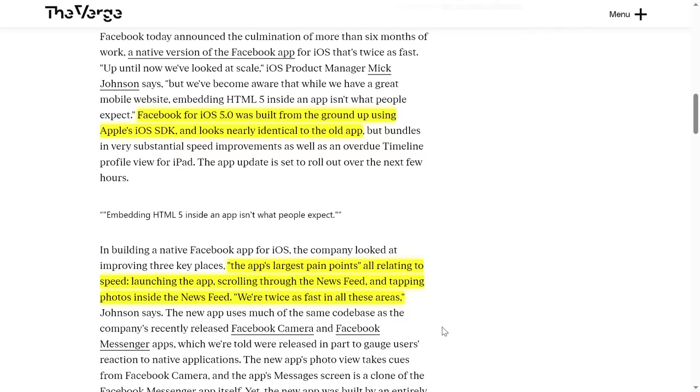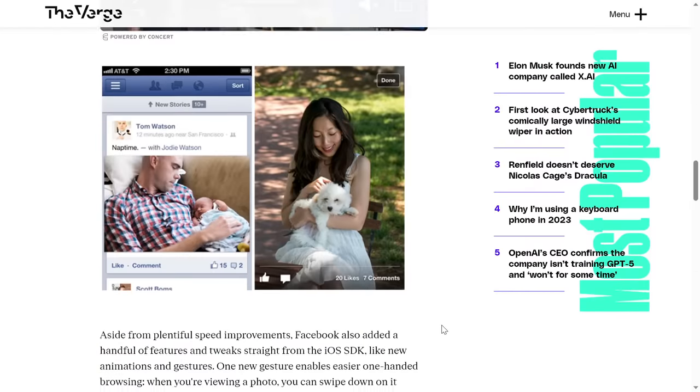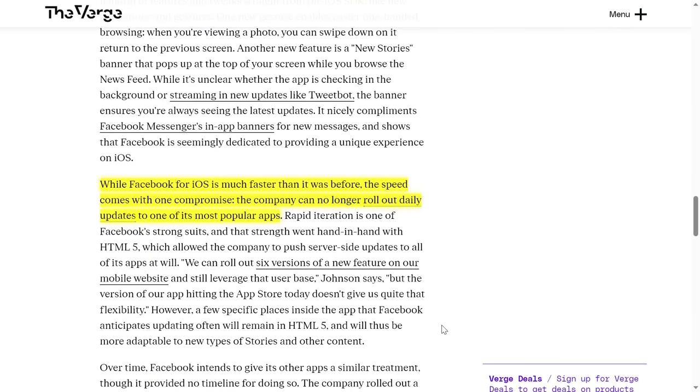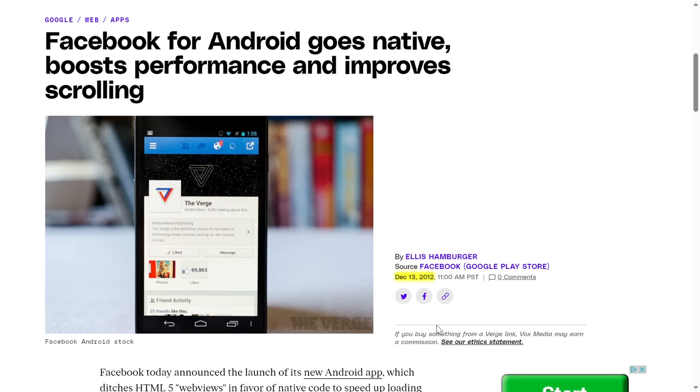Were they willing to make sacrifices to get these performance improvements? They absolutely were. By moving from HTML5 to native iOS, the company could no longer roll out daily updates, which is apparently very important to Facebook, but they were willing to make that sacrifice for the improved performance. In December of the same year, Facebook announced they did the exact same thing for Android, rewriting the application to be native for the exact same reasons.